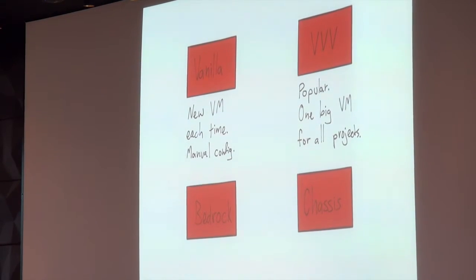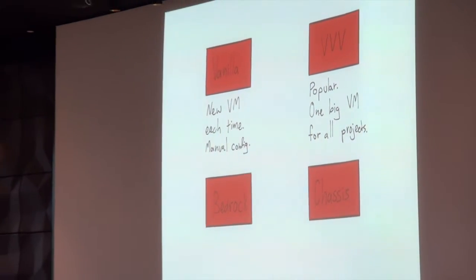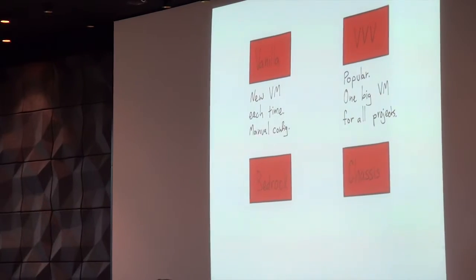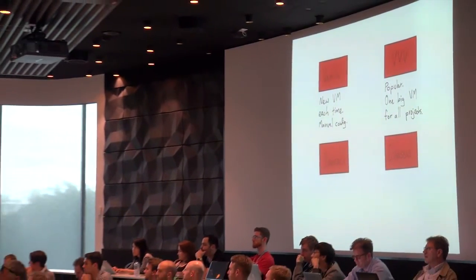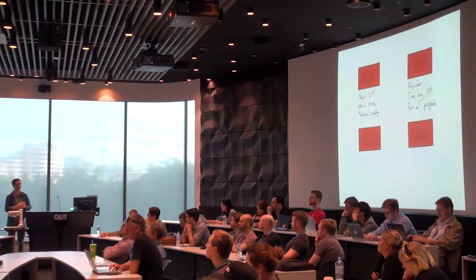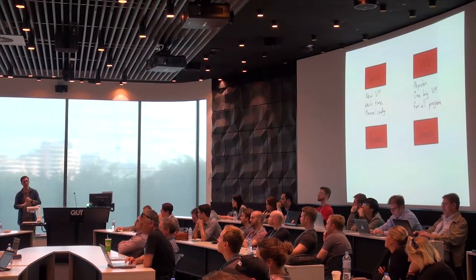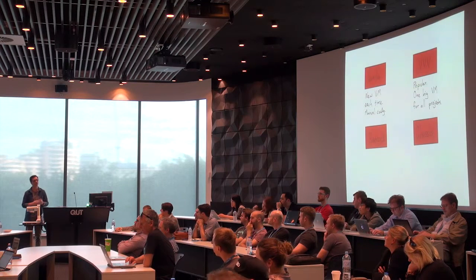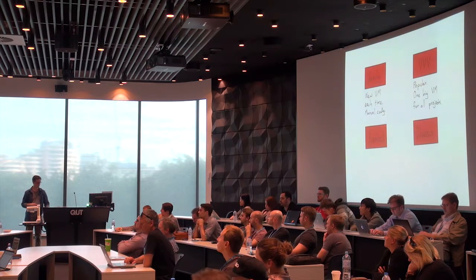There's a system called VVV — you can find it on GitHub — which stands for Varying Vagrant Vagrants. It's quite popular. It's one big VM for all of your projects generally, so you end up with a whole lot of WordPress installs. It's also set up if you're doing development for WordPress core itself. But we'll get to why I prefer not to keep things on one system in a minute.